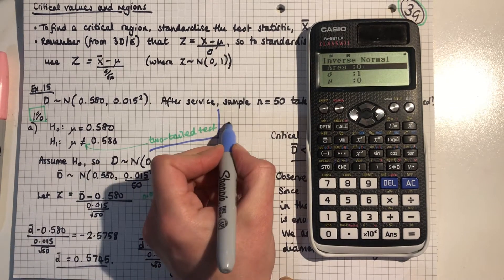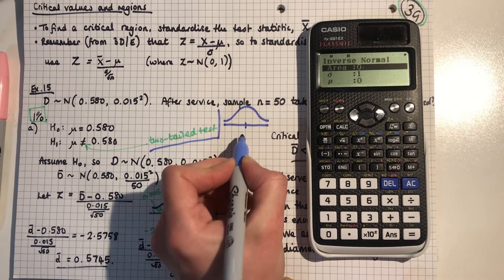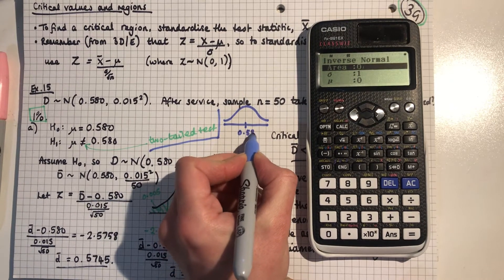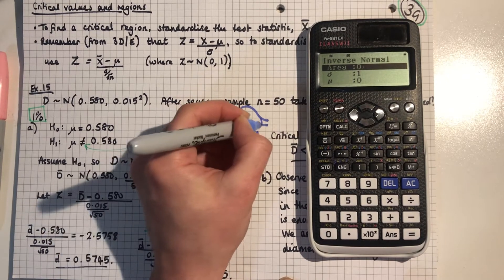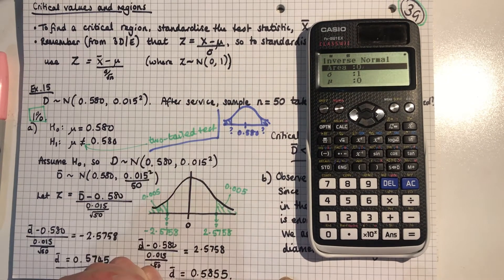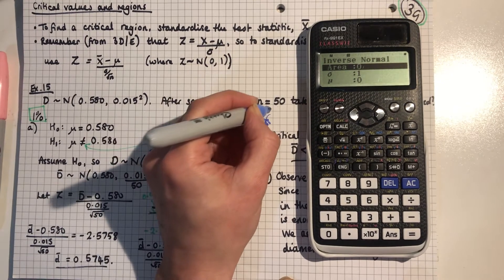What we're doing is we're sticking with D bar and we're taking this normal distribution with a mean of 0.580. And I want to know what's that value and what's that value here, bearing in mind that area is 0.005 and this area is 0.005.